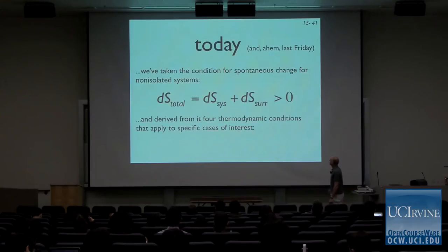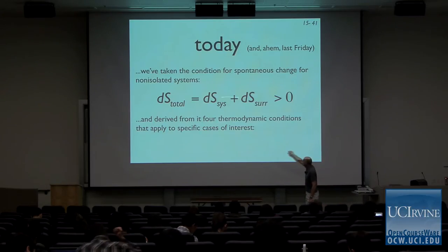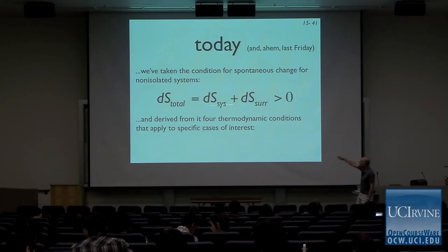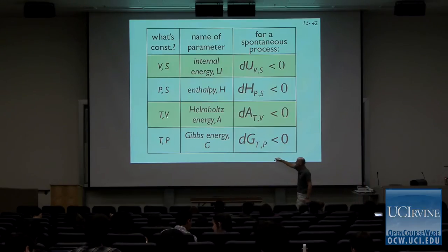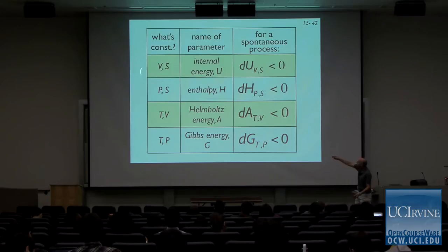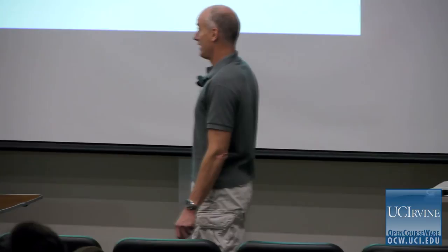So today and last Friday, we've taken the condition for spontaneous change for non-isolated systems — the total entropy change, system plus surroundings, must be greater than or equal to zero — and from that we derived all these different conditions that apply for different constraints: volume and entropy, temperature and volume, pressure and entropy, temperature and pressure. We've got these four different cases. The volume-entropy and pressure-entropy cases are not super useful to us as chemists; the temperature-volume and temperature-pressure cases are more useful, and temperature-pressure is by far the most useful.